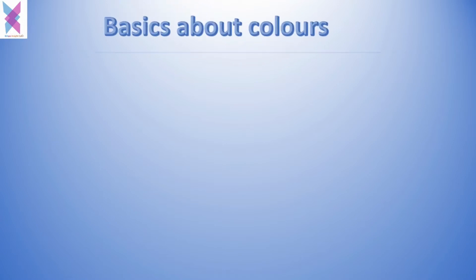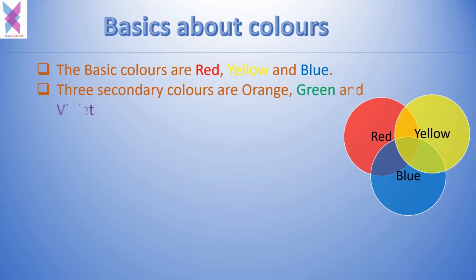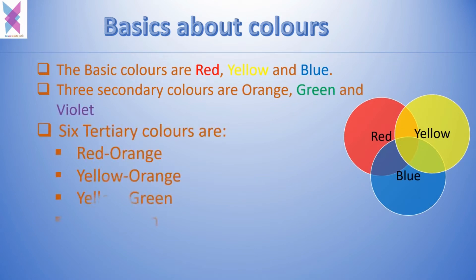It is time to go into the details of our topic. There are three basic colors: they are red, yellow, and blue. In addition to this, there are three secondary colors which are orange, green, and violet. There are also six tertiary colors which are red-orange, yellow-orange, yellow-green, blue-green, blue-violet, and red-violet.